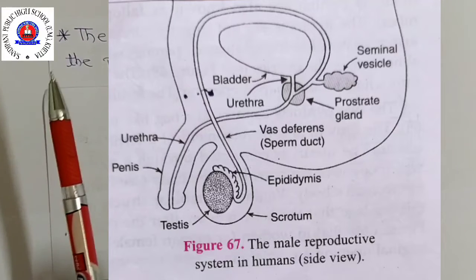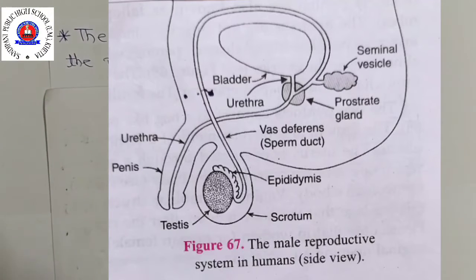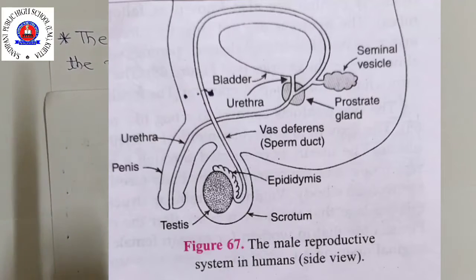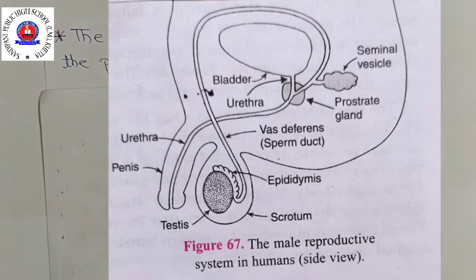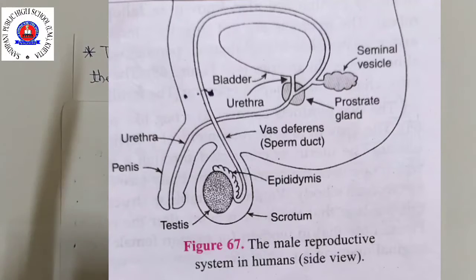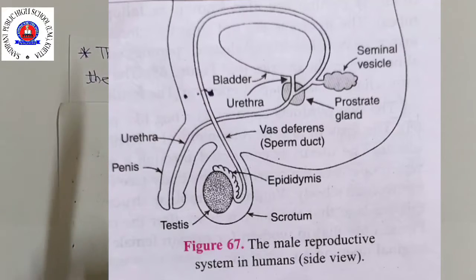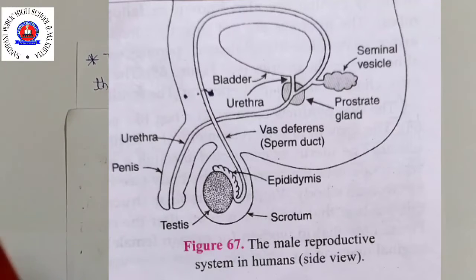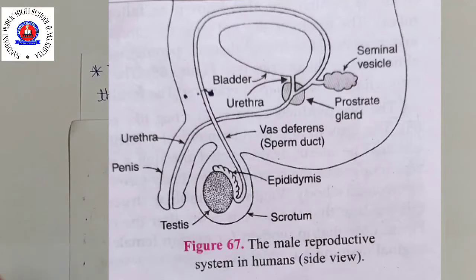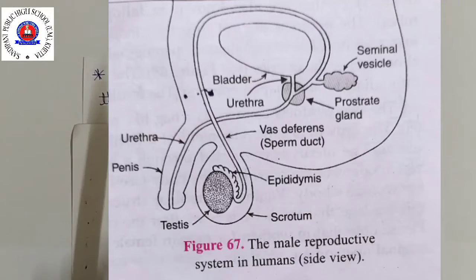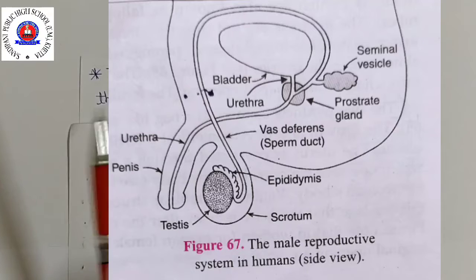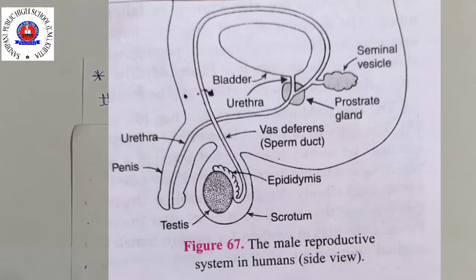The testes of a man lie in a small muscular pouch called the scrotum, outside the abdominal cavity. The testes are outside the body because sperm formation requires a lower temperature than the normal body temperature. The temperature of the scrotum is about 3 degrees Celsius lower than the temperature inside the body, providing an optimal temperature for sperm formation.